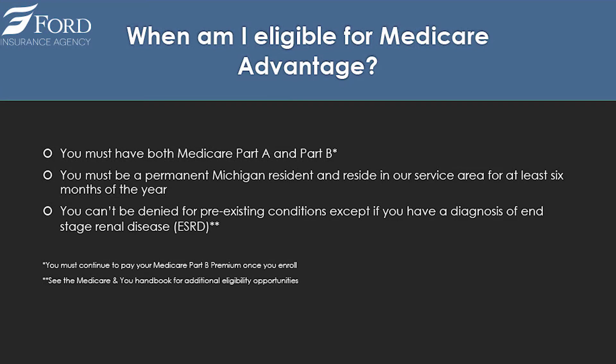When are you eligible to enroll in a Medicare Advantage plan? First, you must have Parts A and B. You must be a permanent resident of Michigan and reside in the service area for at least six months of the year. You can't be denied for pre-existing conditions, except for a diagnosis of end-stage renal disease (ESRD) — though in 2021 that exception goes away.